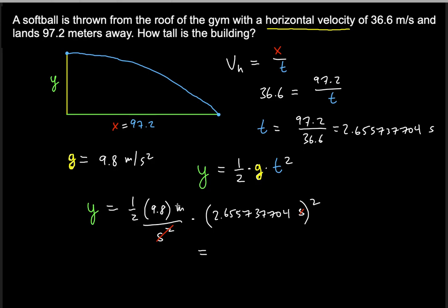And the only unit that remains is going to be the meters, which makes sense because we need to find the vertical distance. And the building height. How tall is the building? That's the question. So if you do this correctly, your calculator should give you 34.55941949.